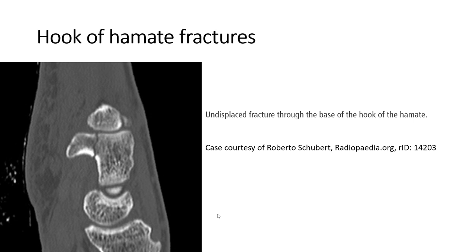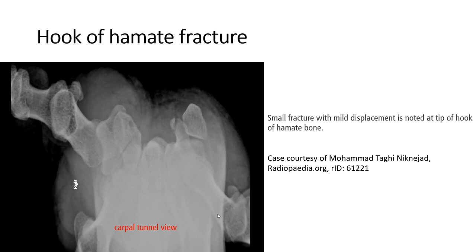In the example shown, a wrist CT demonstrates a fracture line through the base of the Hook of the hamate. This is the carpal tunnel view of the wrist, where we can see the fracture line through the tip of the Hook of hamate.